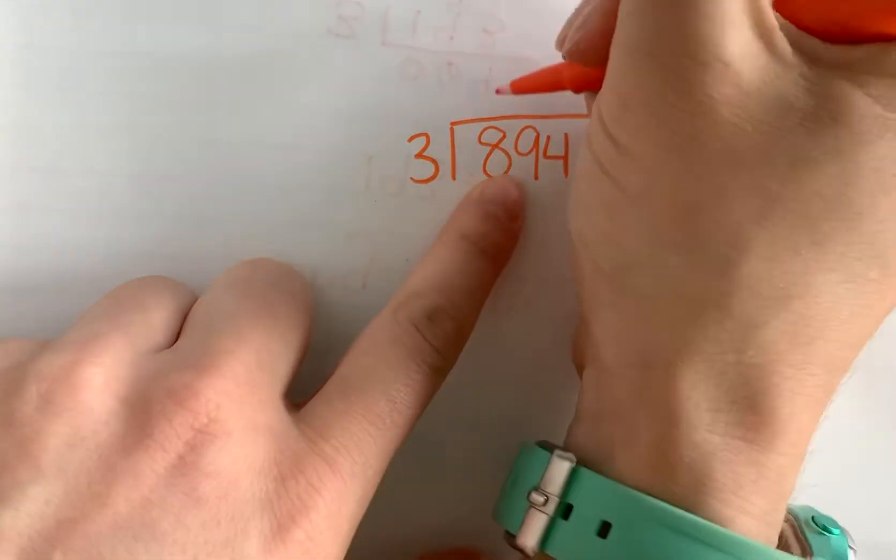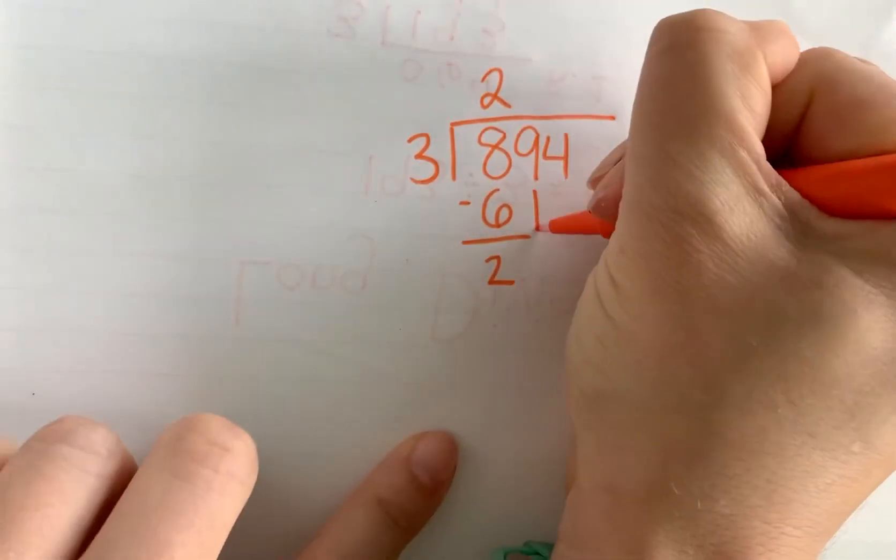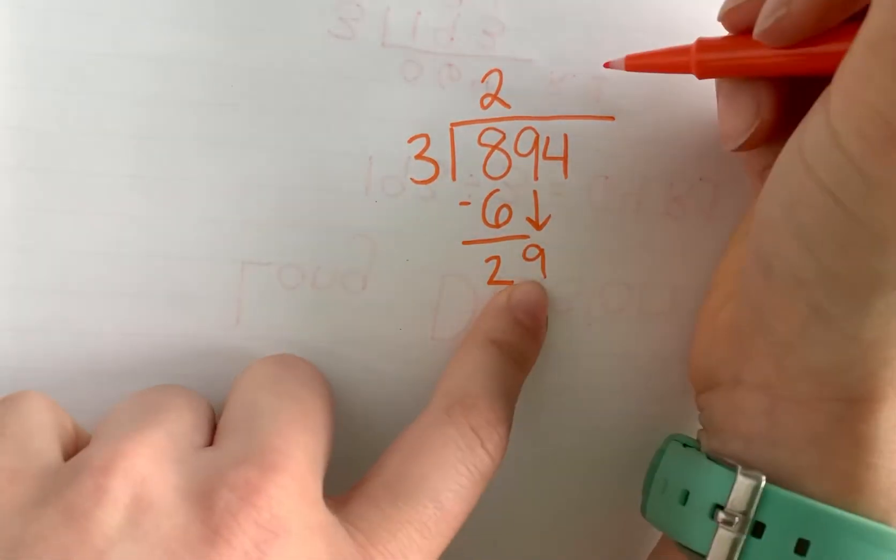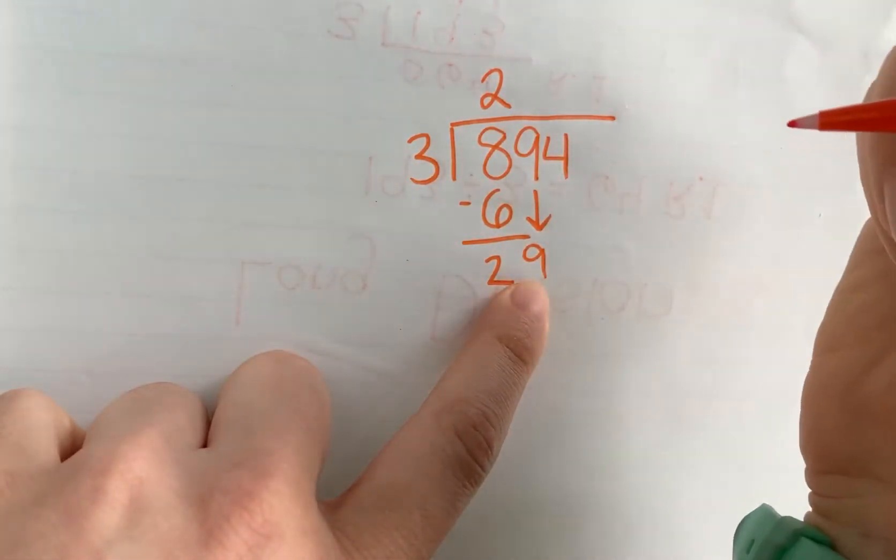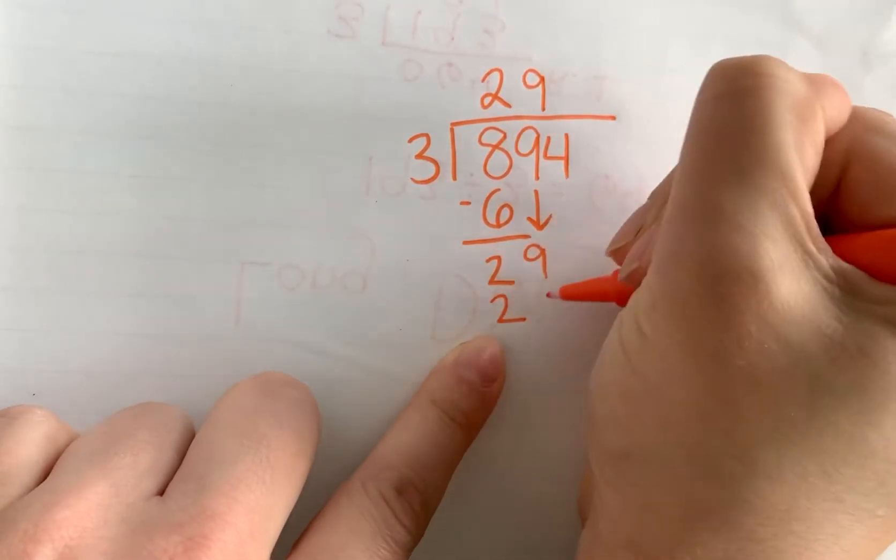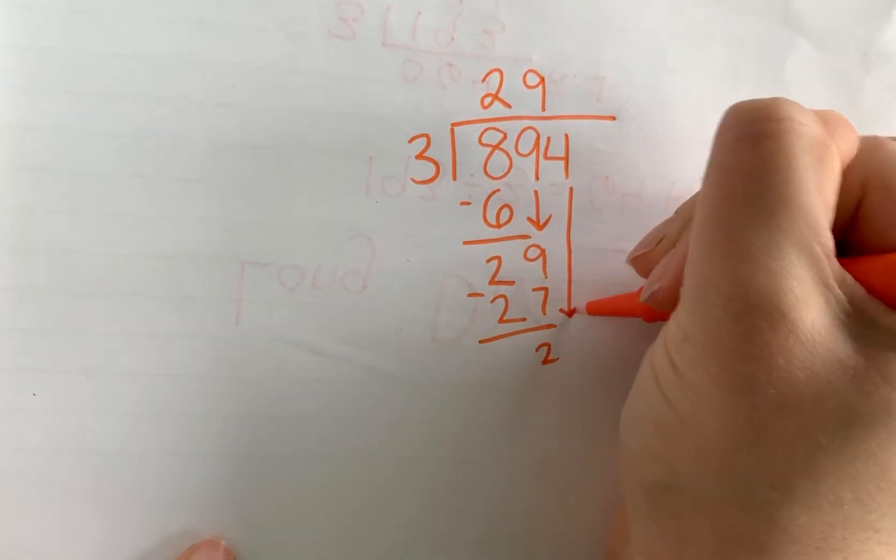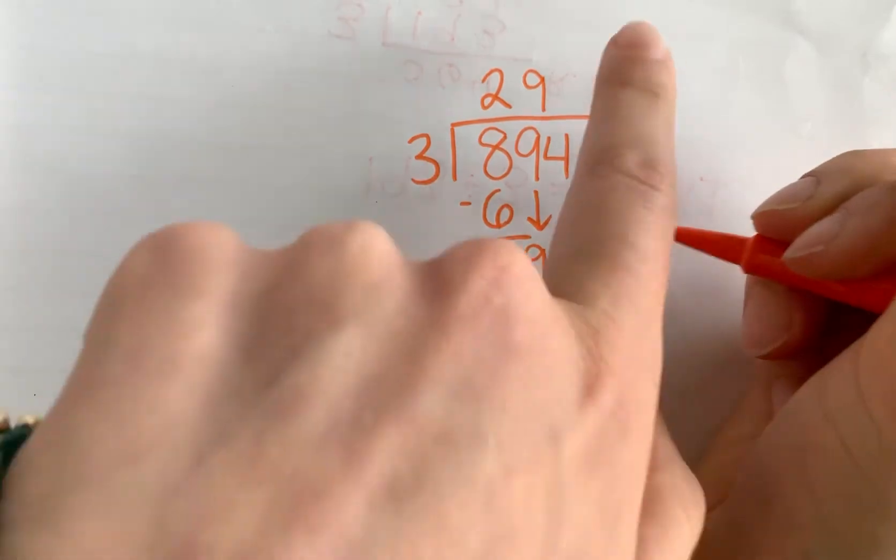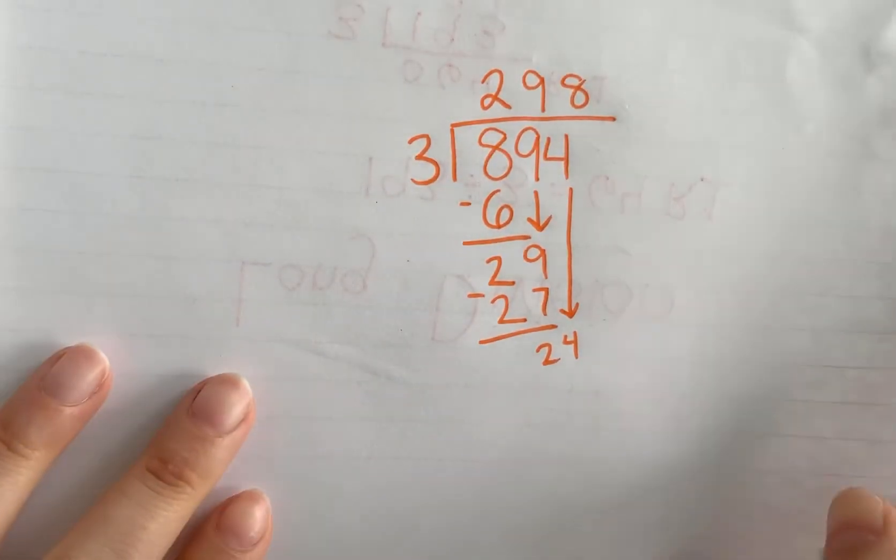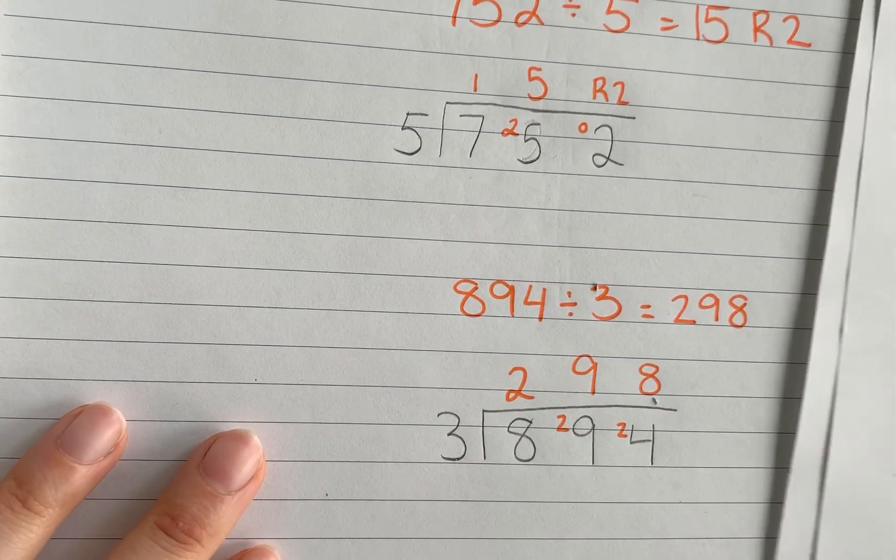3 goes into 8, 2 times 2. Drop down. 3 goes into 29. We said that was 3 times 9 is 27. Bring down my 4. 3 times 8 is 24. So we got the same exact answer as we did over here, 298.